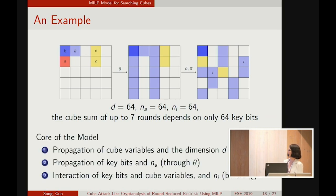So this is an example of the cube with parameters D and A and I being all 64. From this example, we can derive the core of our model. That is, we need to model three things. First, we need to model the propagation of cube variables and the dimension D. And the propagation of key bits through theta and the number of auxiliary variables. And last, the interaction of key bits and cube variables just before the chi and the count of the number of key bits the cube sum will depend on.